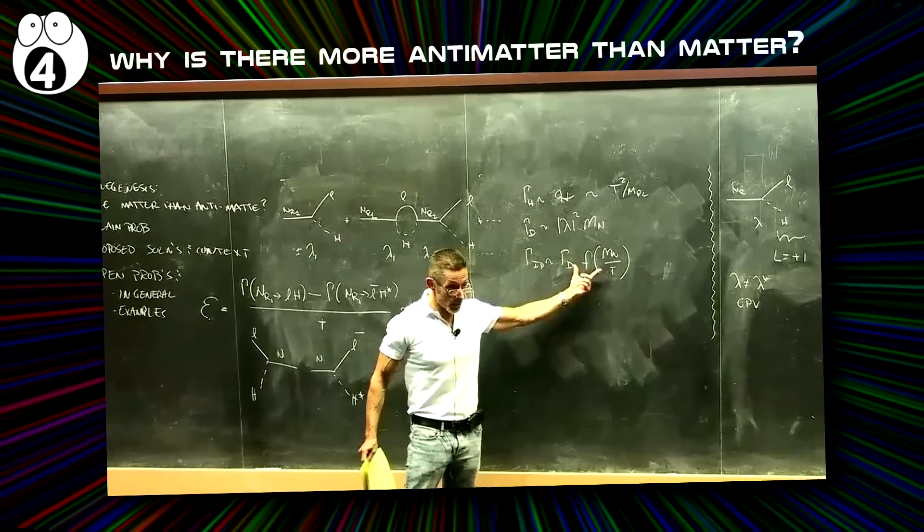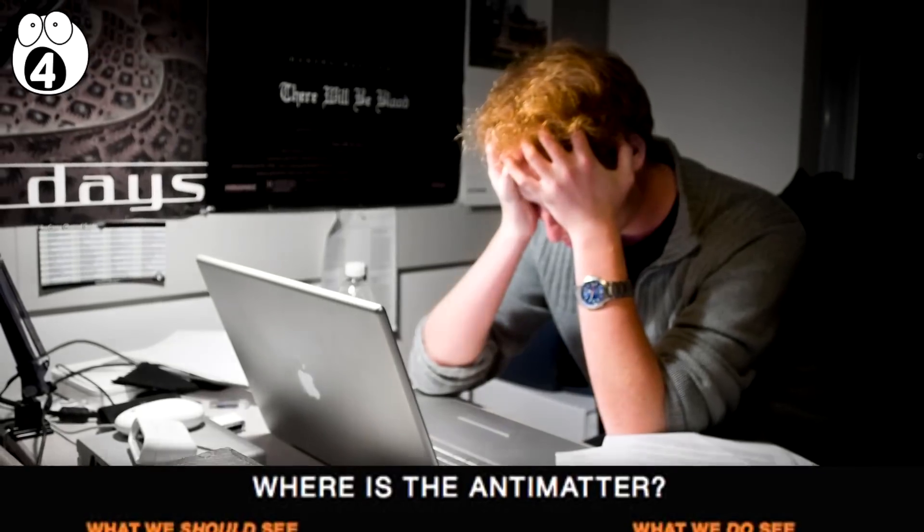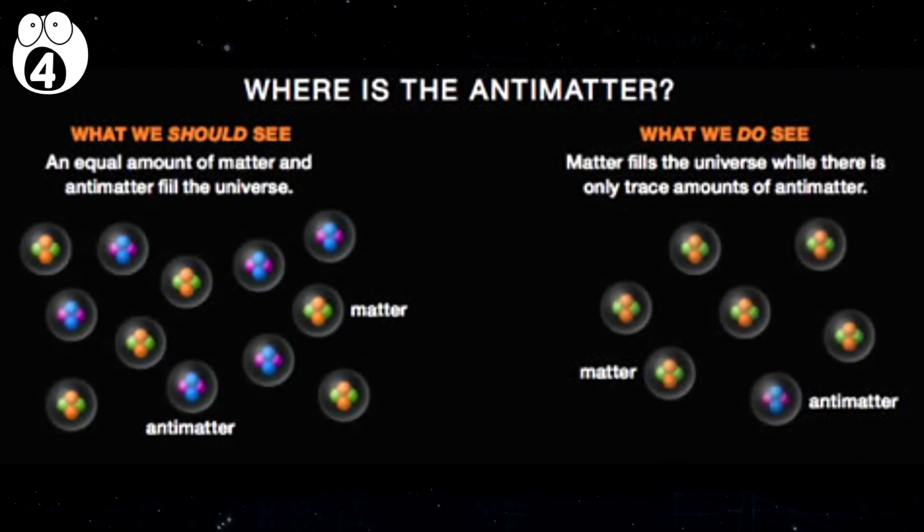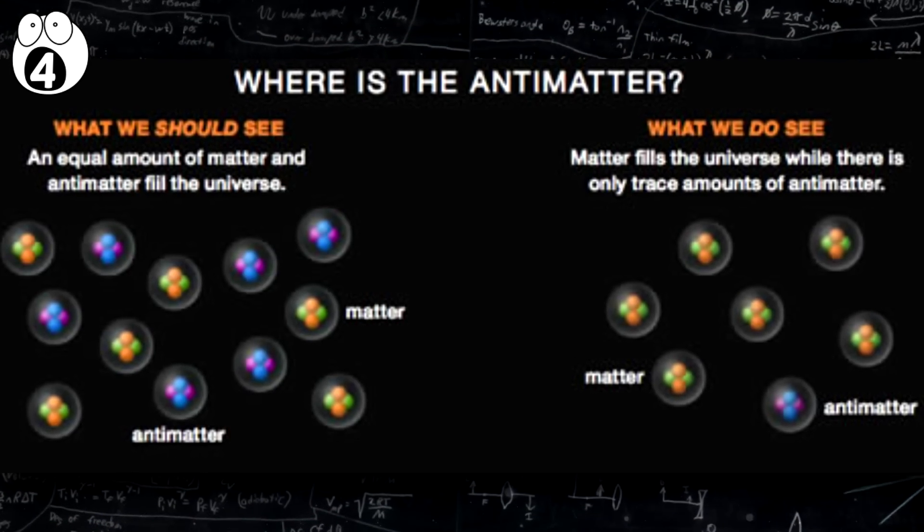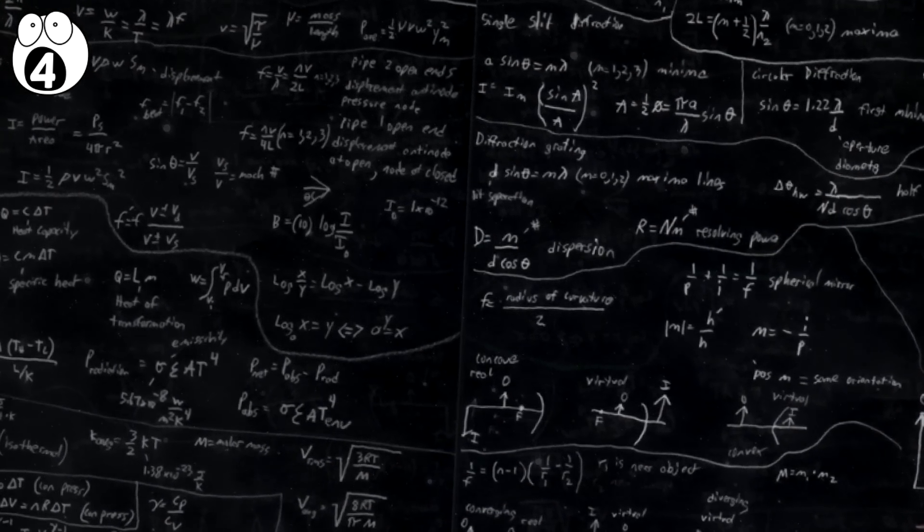Why is there more antimatter than matter? This question refers to an old problem in physics, called the baryon asymmetry problem. The problem came to be because there is an imbalance in the number of matter and antimatter in the observable universe that cannot be explained by the standard model of particle physics, nor using general relativity.